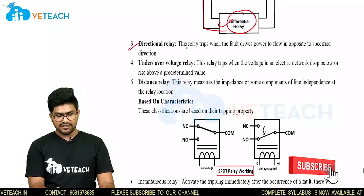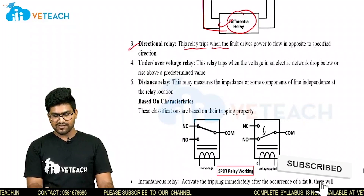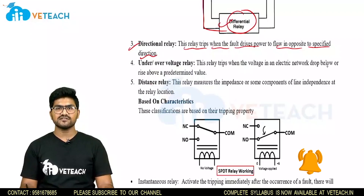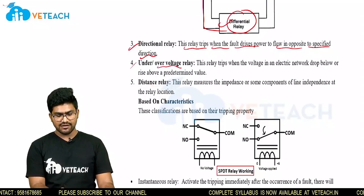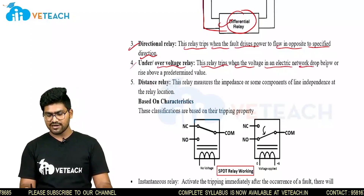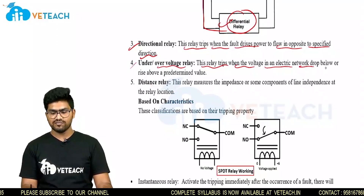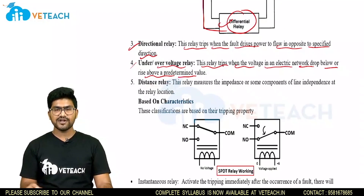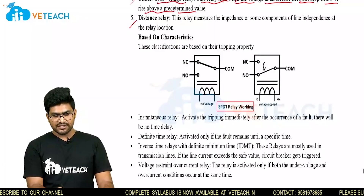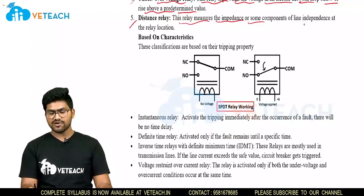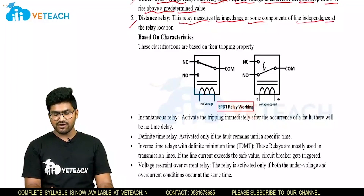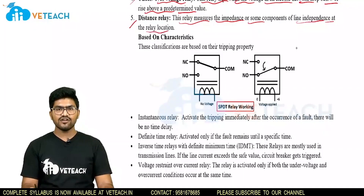Coming to directional relay — this relay trips when the fault drives power to flow in the opposite to specified direction. Next is under or over voltage relay. This relay trips when the voltage in an electrical network drops below or rises above a predetermined value. Coming to distance relay — this relay measures the impedance or some components of the line impedance at the relay location.